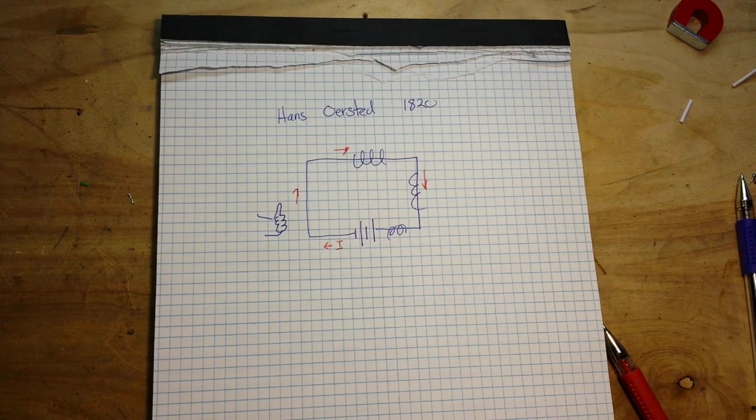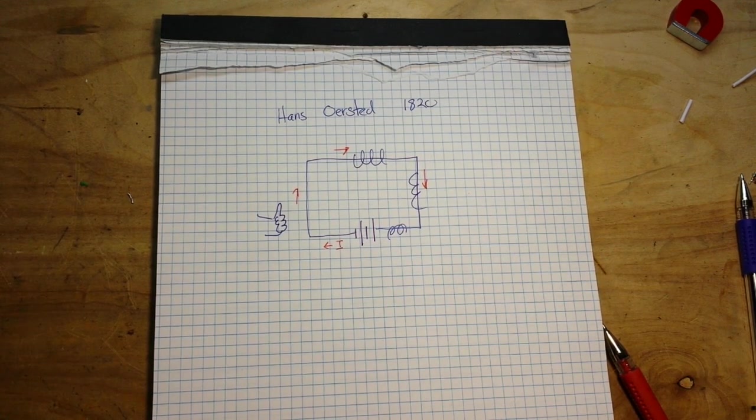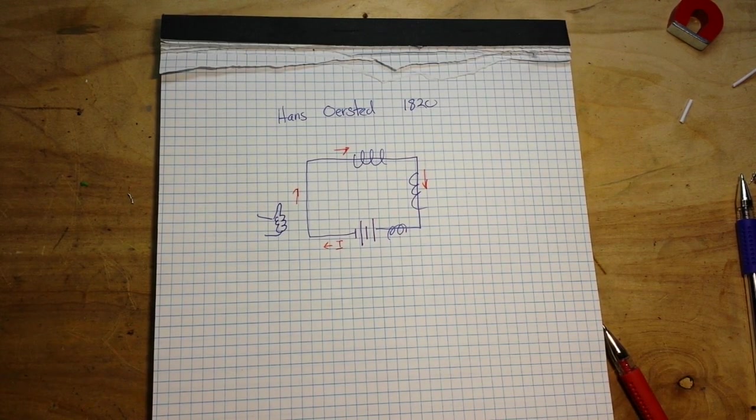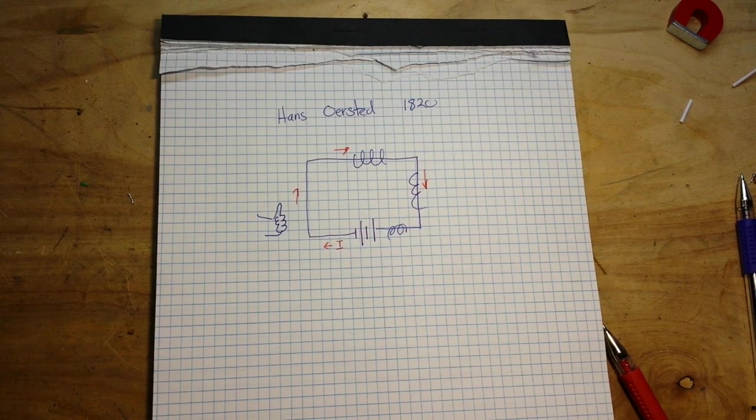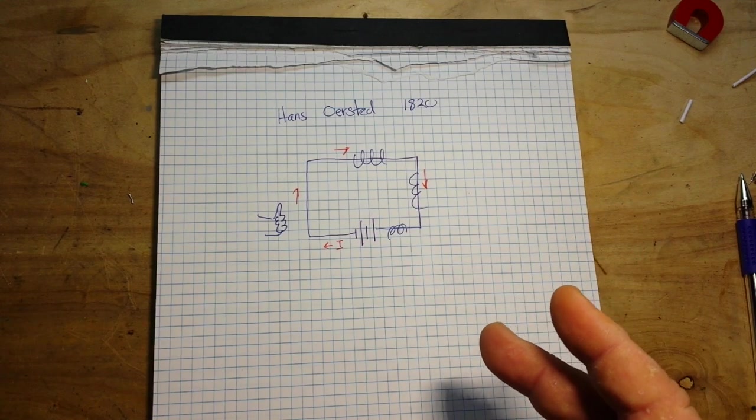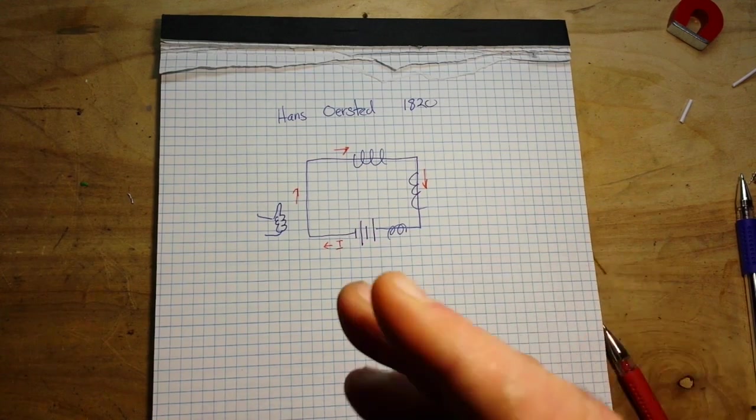Now the magnetic field that encircles a straight piece of wire has no poles—it is neither north nor south—and it's very weak. It's enough to deflect a compass but not much more. If we want to create a stronger magnetic field, i.e. have more flux.